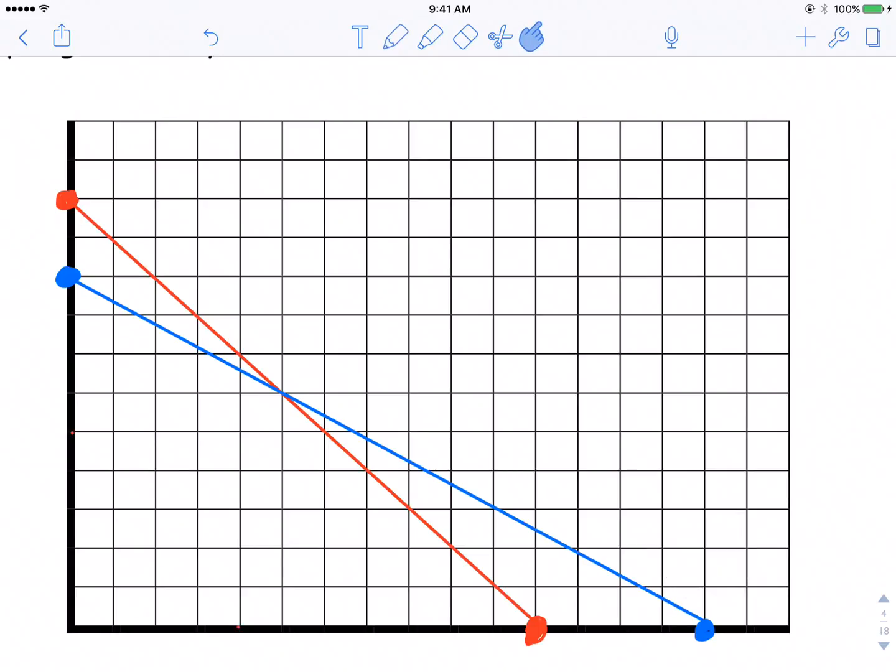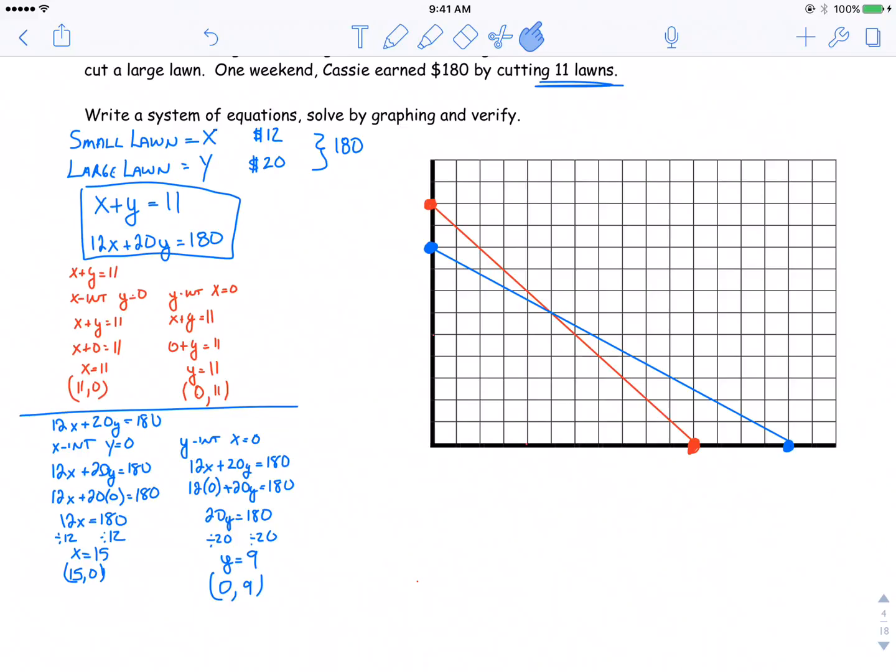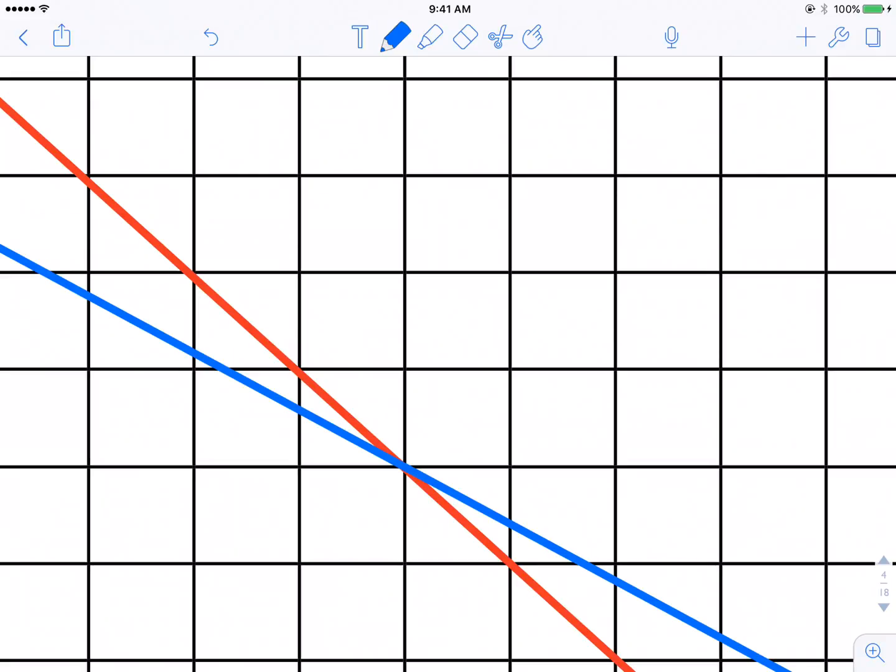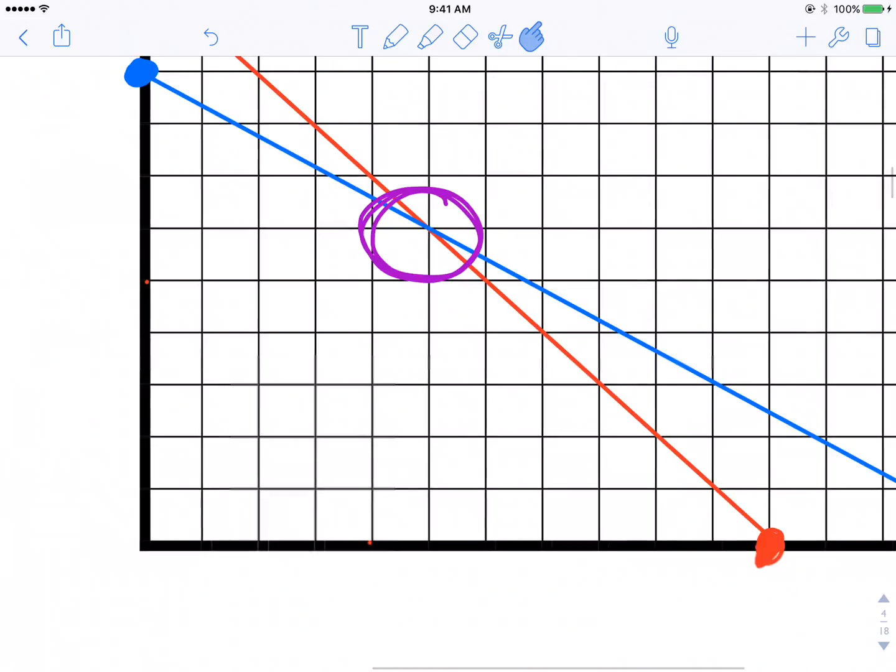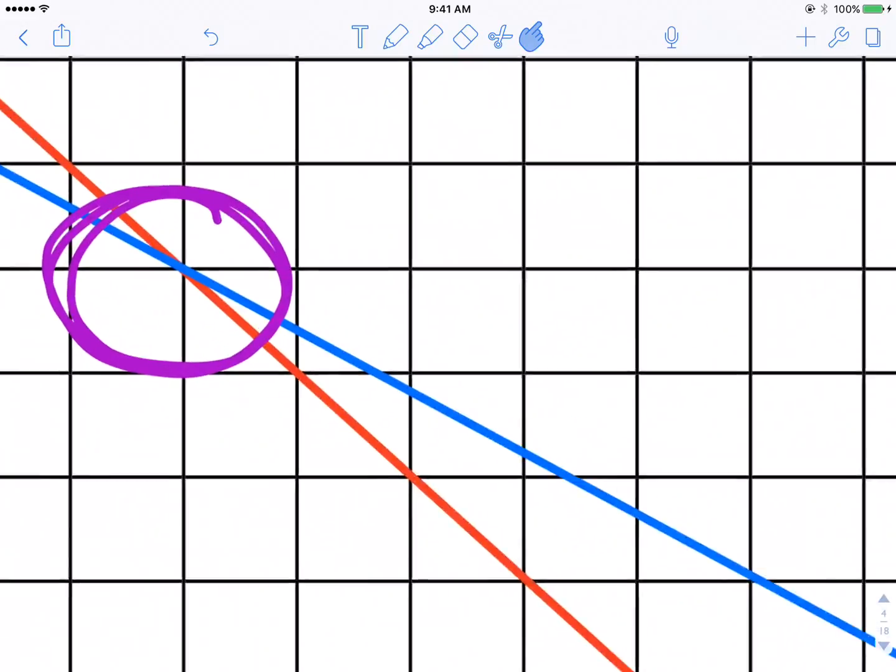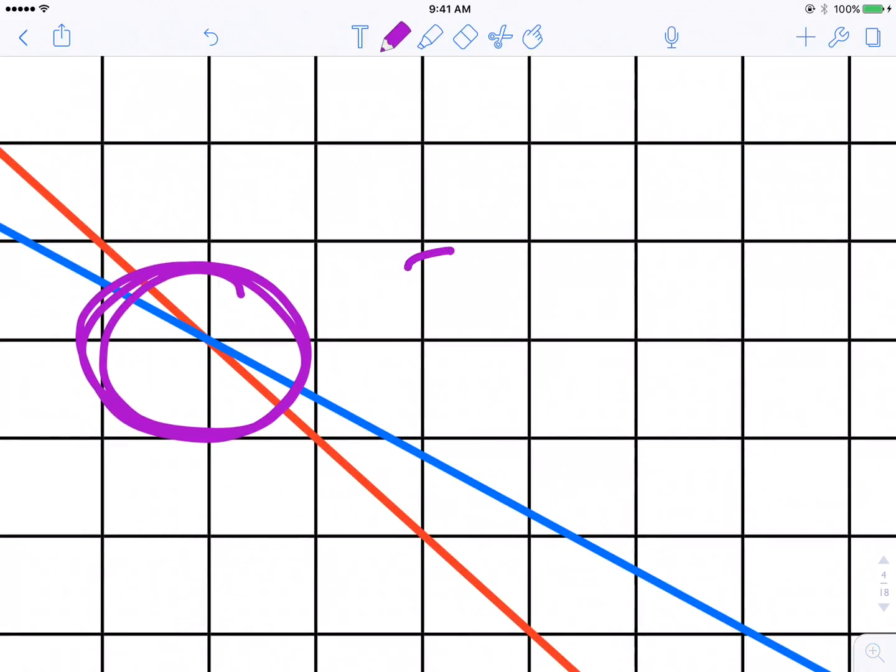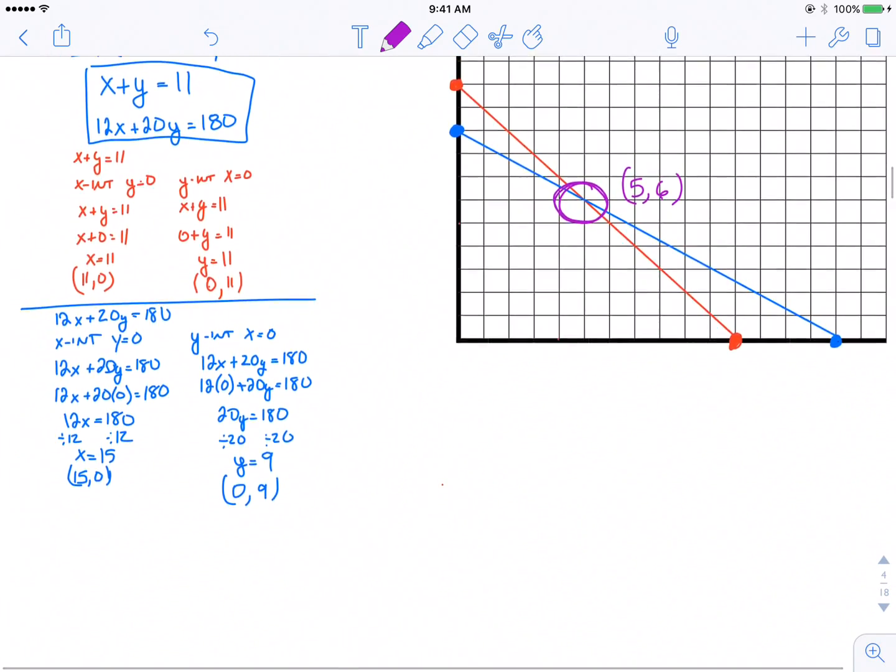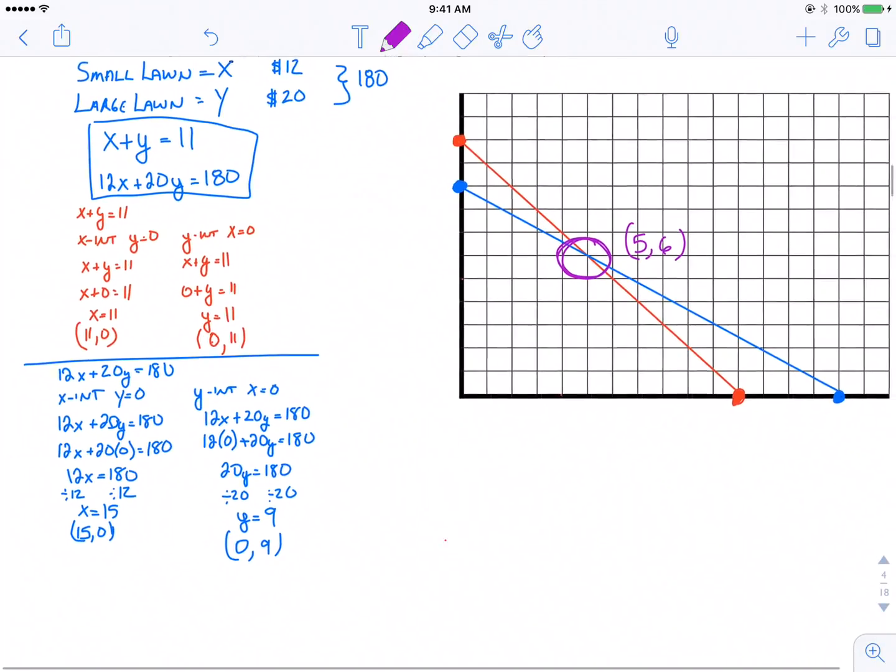I've graphically represented both of those. Look to see where they crisscross. The coordinates of this point should be the solution to our system. The coordinates of that point are one, two, three, four, five, one, two, three, four, five, six. Five comma six.